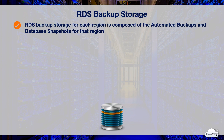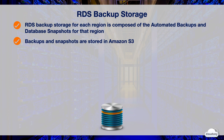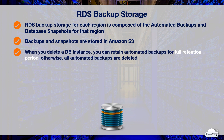RDS backup storage for each region is composed of the automated backups and database snapshots for that region. Total backup storage space equals the sum of the storage for all backups in that region. Copying a DB snapshot to another region can increase the size of the backup storage in the destination region. Automated backups and database snapshots are stored in Amazon S3. You can choose to retain automated backups when you delete a DB instance, and they are saved for the full retention period. Otherwise, all automated backups are deleted with the DB instance. After automated backups are deleted, they cannot be recovered.